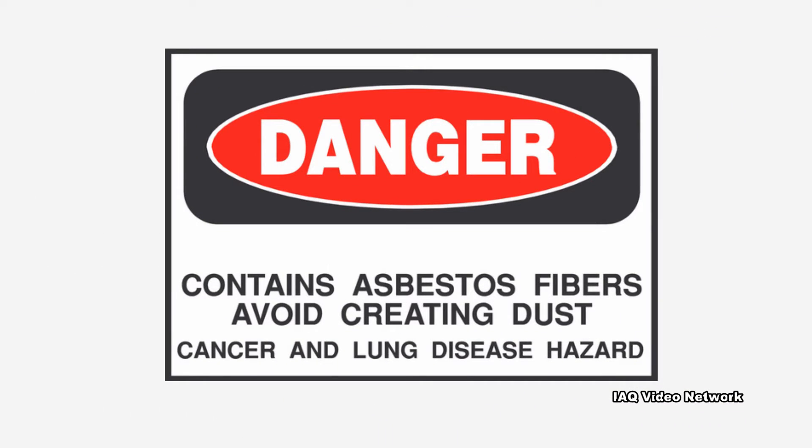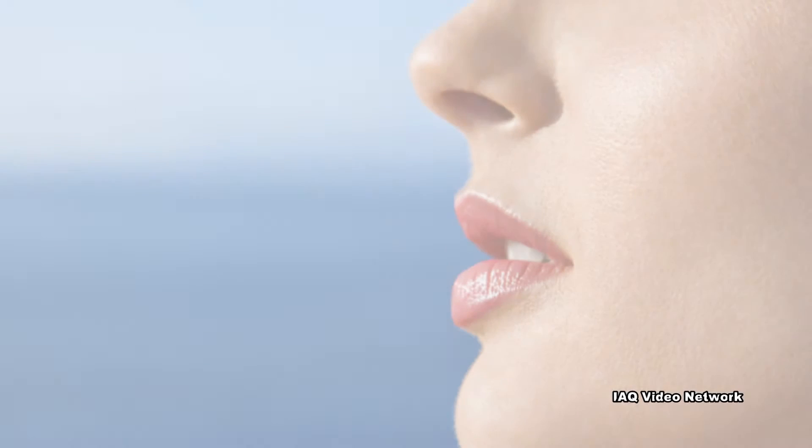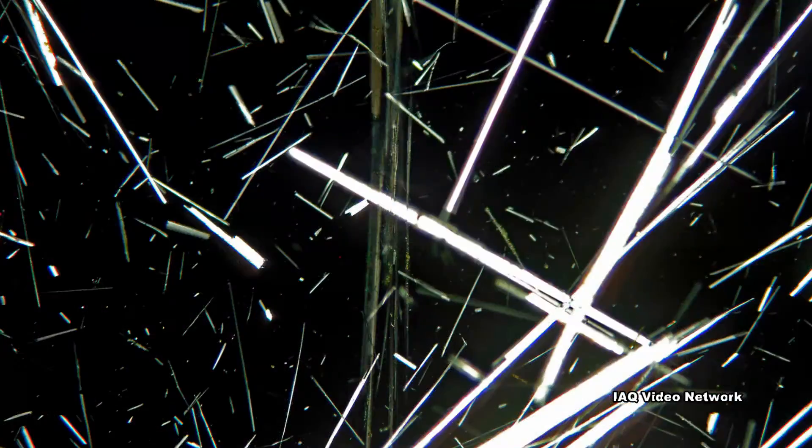Exposure is most likely to occur when the asbestos-containing material is disturbed or damaged in some way, releasing particles and fibers into the air. These fibers can then be inhaled by people in the area. Even people who live with a person that worked near or with asbestos may be at increased risk for developing mesothelioma.